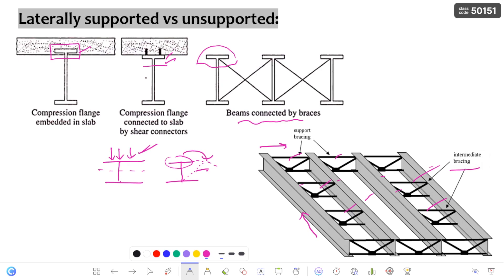I always draw I-sections here because it is an open section. Whatever open sections are, they are going to undergo torsional buckling — not closed sections. If you consider hollow box sections or solid sections, they will not undergo torsional buckling. Also, whenever you apply transverse loading with respect to the major axis — remember, if there is only pure minor axis bending, there is no chance of lateral torsional buckling. Only if there is major axis bending will lateral torsional buckling take place.